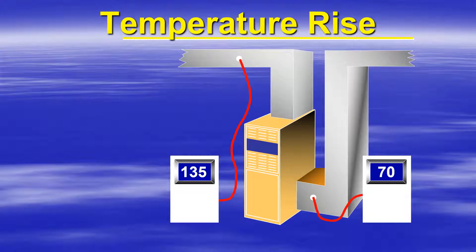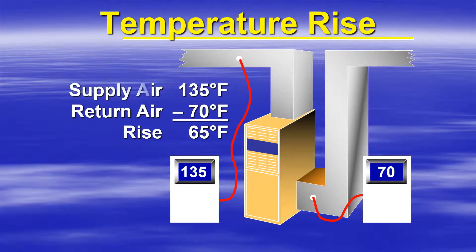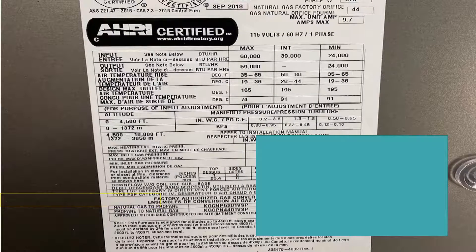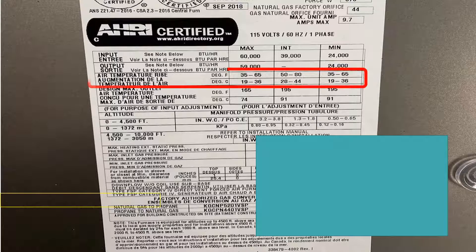Taking our return air temperature and our supply air temperature — in this example we have a 70-degree return air and a 135-degree discharge air. We take these two numbers and subtract them to get our temperature rise of 65 degrees. We then go back to our furnace data chart and find our air temperature rise parameters.